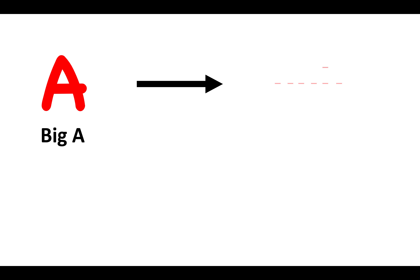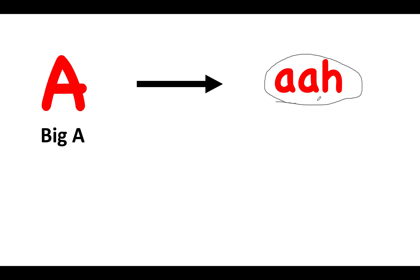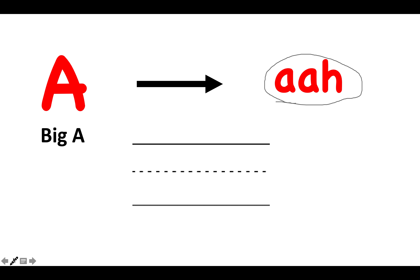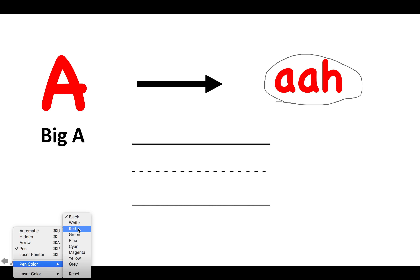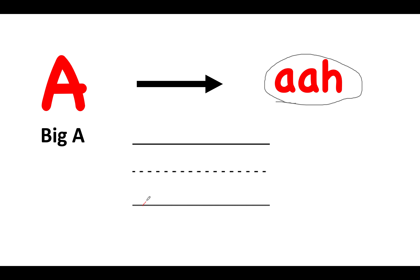This is the big letter A. But what sound does the big letter A make? Well, it makes the A sound. It makes the A sound. A. So let us now see if we can trace the big letter A, and it looks something like this.